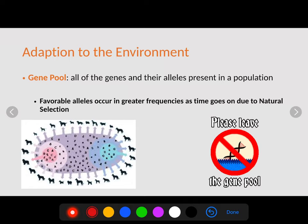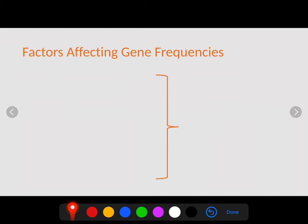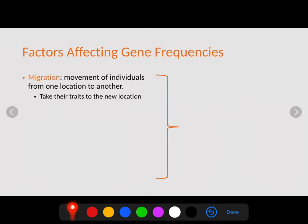This brings us to the concept of a gene pool — all of the genes and their alleles present in a population. Think about all the different types of dogs in the world: they are the same species and pull from the same gene pool, but which alleles they express determines what they look like. Favorable alleles occur at greater frequency over time because those are the alleles selected for best survivability of the population.